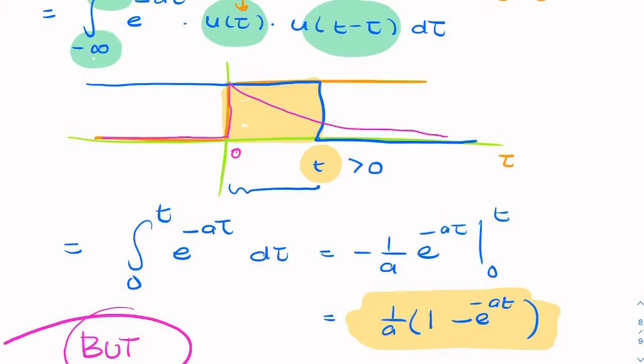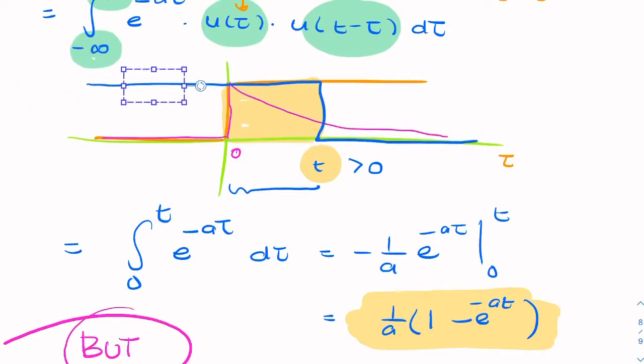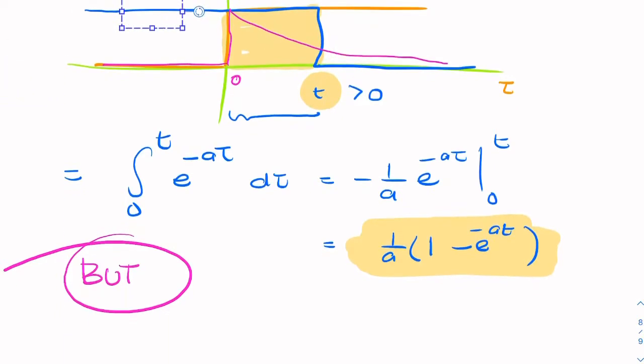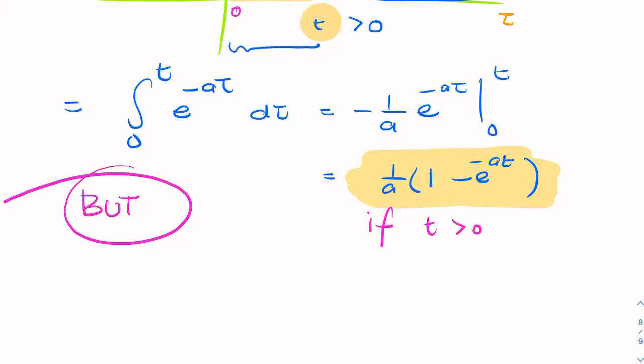But remember that I said that that would only hold if t is positive. Remember we said that t could be negative, and if that was the case, if t was negative, then there would be no integration. The product would be zero. If it's positive, that's fine, but if it's zero or it's negative, when you multiply you're just multiplying zero times zero times x of t. So what we need to say is this only holds if t is greater than zero. We have to mention that, otherwise it's equal to zero.